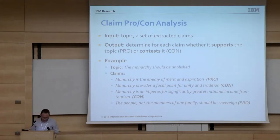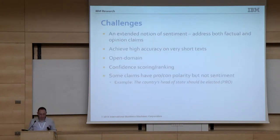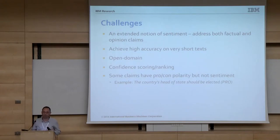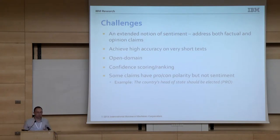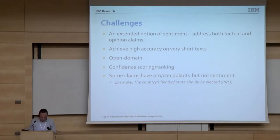The last one — 'the people, not the members of one family, should be sovereign' — is again against the monarchy, so it's a pro claim. Now this is a challenging task for several reasons. First, we need to deal with both factual claims and claims that express opinion, much like work in sentiment analysis. The setting is open domain — we can be given any topic in any domain — and we need to provide confidence scoring or ranking. Finally, some claims have pro-con polarity but don't contain sentiment. For example, 'the country's head of state should be elected' is a pro claim for abolishing the monarchy but doesn't have a clear sentiment.